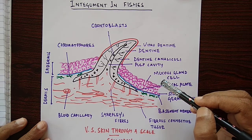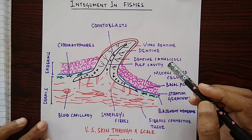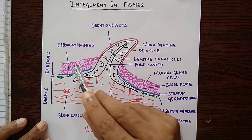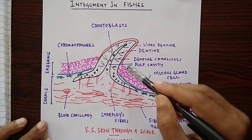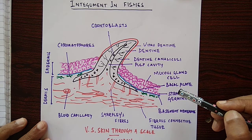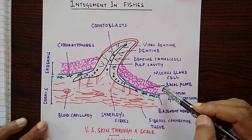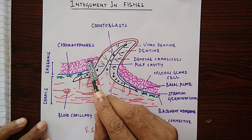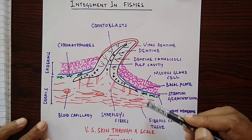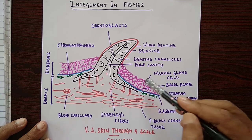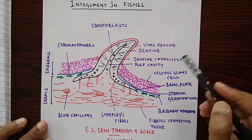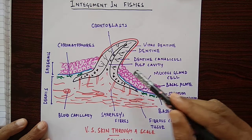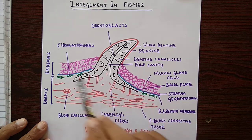There is no stratum corneum in fish because they are aquatic. Stratum corneum is present only in terrestrial vertebrates, at the outer surface of the body, and it has dead cells. In fish, dead cells are absent. Sometimes cells are flattened due to accumulation of keratin, but fish do not have a stratum corneum.